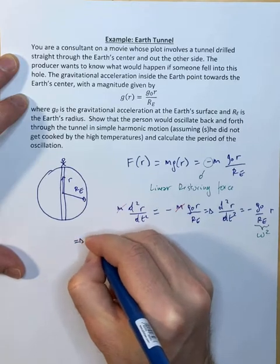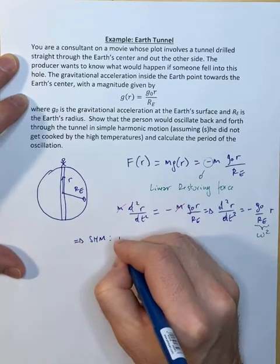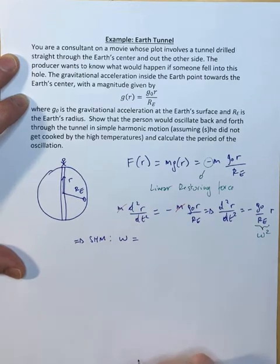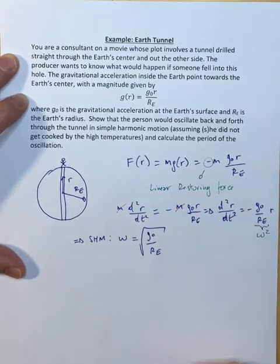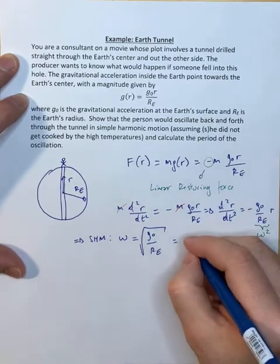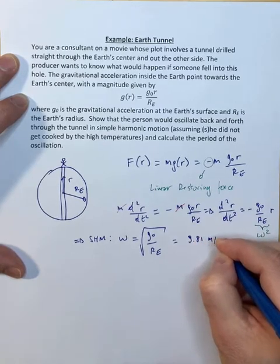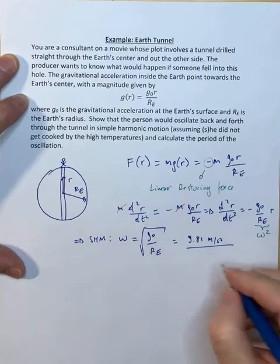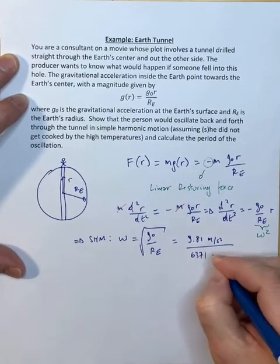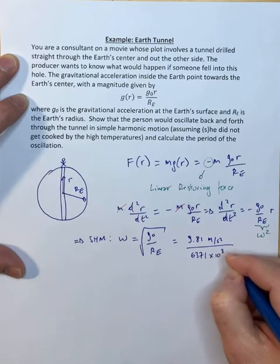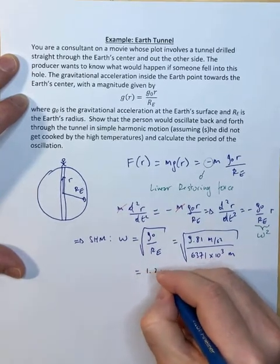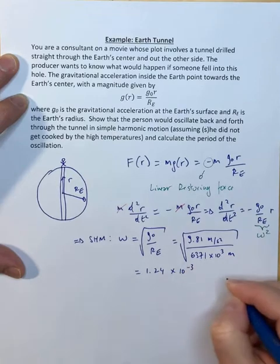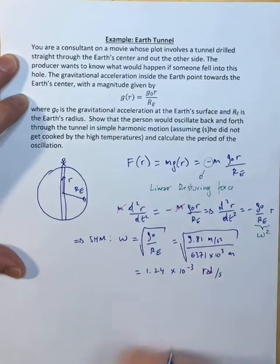We know that this here equals ω², that's what we get from simple harmonic motion. So indeed we will get simple harmonic motion and our angular velocity is going to be the square root of g₀/rₑ. So that we can now work out. g₀ is the acceleration due to gravity at the surface, so that's 9.81 meters per second squared. The radius of the earth is 6371 kilometers. Square root of this and if you plug in those numbers you find 1.24 times 10⁻³ radians per second.